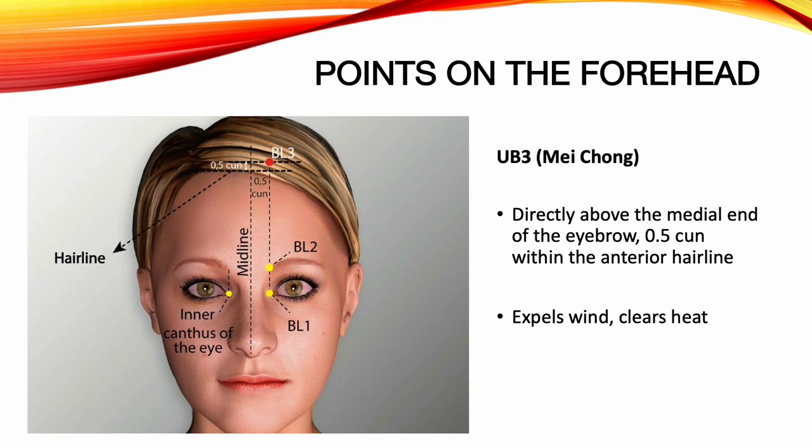Urinary Bladder 3, Mei Chun. Location: directly above the medial end of the eyebrow, 0.5 Sun within the anterior hairline. Functions: expels wind, clears heat. Indications: headache, dizziness, nasal congestion, seizures.